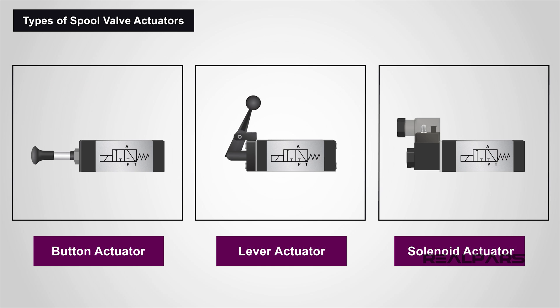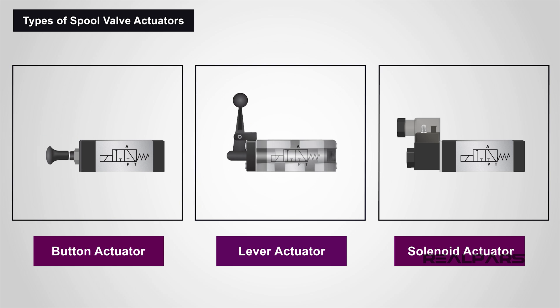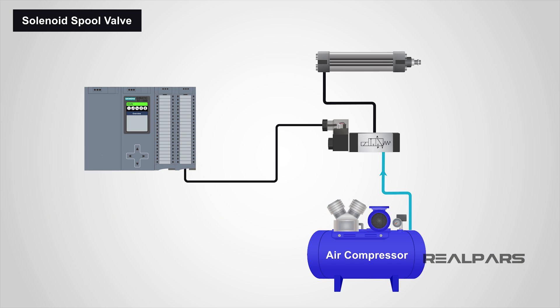The spool can be moved in many different ways: manually using a button or a lever, or as part of a larger control system using a solenoid actuator. Whatever the method chosen to control the valve, all that we are doing is simply pushing the spool to move within the housing, and by doing this we are allowing or blocking the path between the ports.